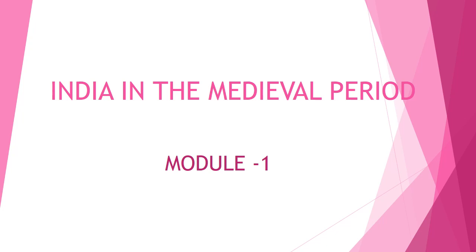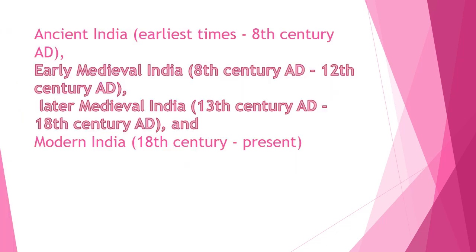Hello all, warm greetings. Let us go into the world of history by starting the first chapter: India in the medieval period. The history of India is divided into three different periods: ancient, medieval, and modern. Ancient India spans from the earliest times till the 8th century. The medieval period is divided into two segments: early medieval India from the 8th century till the 12th century, and the later medieval period from the 13th century till the 18th century. Modern India is from the 18th century till present times. In this chapter we will be talking about the medieval period.